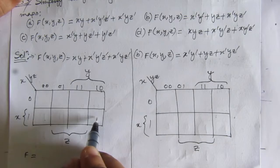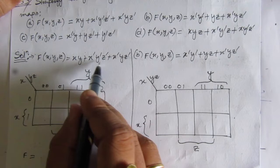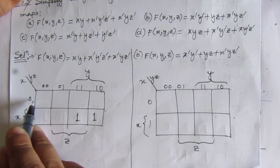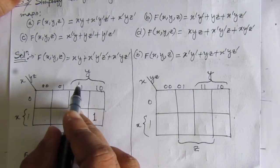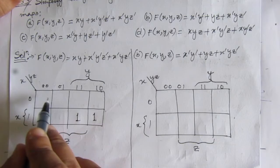For the second term x̄ȳz̄: x bar corresponds to this row where x is 0. Then ȳ means these two columns where y is 0. We have these two common columns, and then z̄ — z is 0 — so we can only put 1 here.